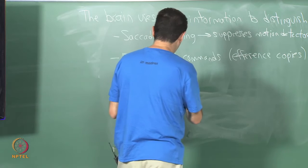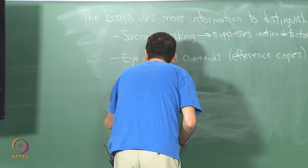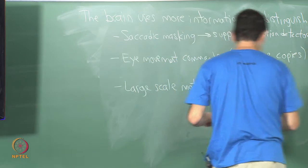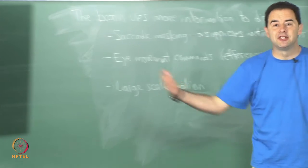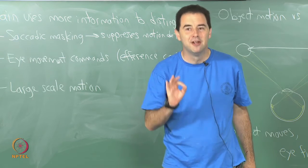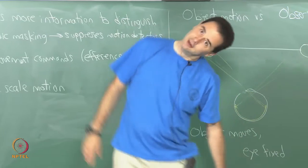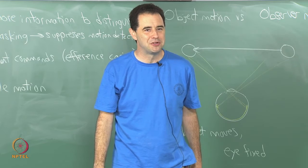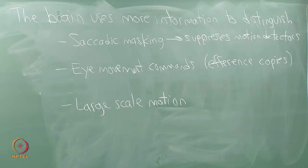Finally, one more piece of information is large-scale motion. If the entire scene is moving, what is usually the case? Is it usually the case that everything around us is moving simultaneously, or does that usually mean we are moving? So if I suddenly notice a huge change — it is very unlikely that all of you are rotating. That is prior information: if there is enormous large-scale motion across the retina, probably you are the one that is moving.